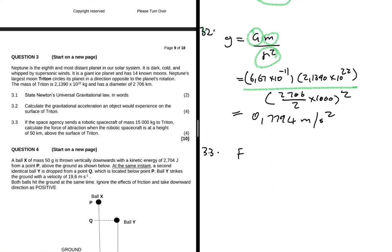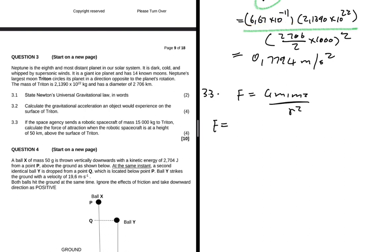So F will be equals to G, which is our universal gravitational constant, 6.67 times 10 to the minus 11. And then we want the force of attraction between Triton and the robotic spacecraft. So let's say m1 is the mass of the spacecraft, which is 15,000, and then m2 is the mass of Triton, which is 2.1390 times 10 to the 22.